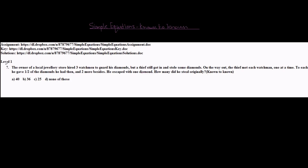The problem I have taken to start with is a level 1 problem in the assignment. The assignment link is given here: HTTPS backslash DL dot Dropbox dot com and so on. You can download the assignment from this link and access these problems. The key and solutions are also given in the following links. This is problem number 7 in level 1 of that assignment.